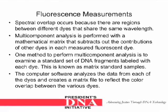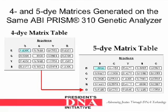Fluorescence measurements: spectral overlap occurs because there are regions between different dyes that share the same wavelength. Multi-component analysis is performed with a mathematical matrix that subtracts out the contributions of other dyes in each measured fluorescent dye. One method is to examine a standard set of DNA fragments labeled with each dye, known as matrix standard samples. The computer software analyzes the data from each of the dyes and creates a matrix file to reflect the color overlap between the various dyes. Here is an example of what a four-dye matrix table and a five-dye matrix table will look like.